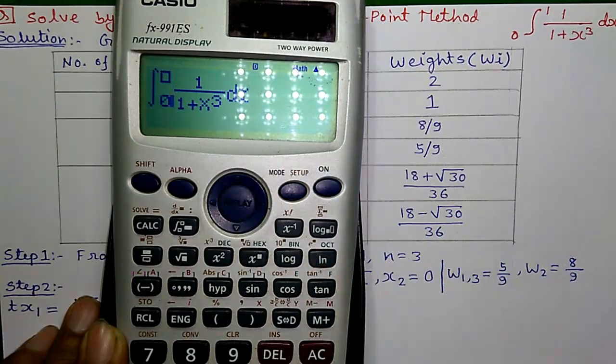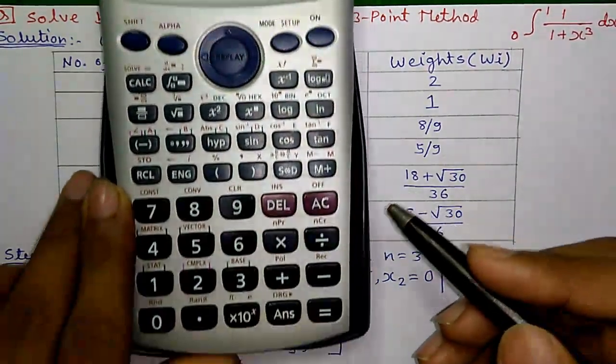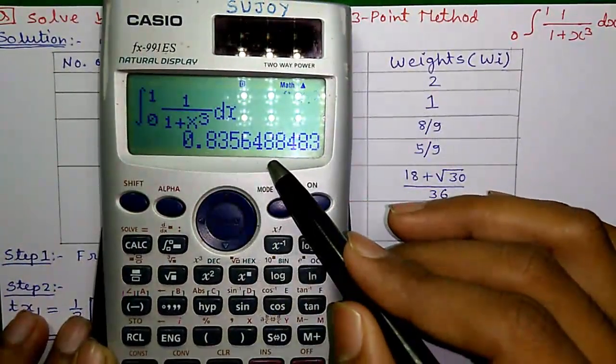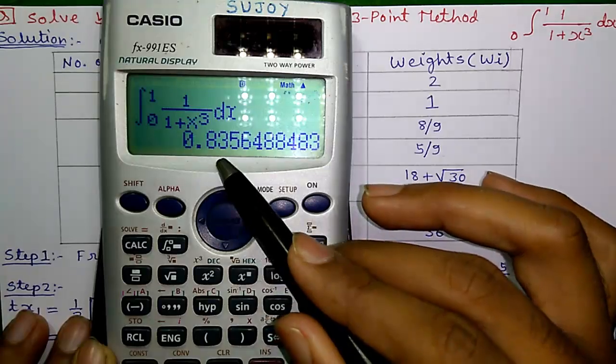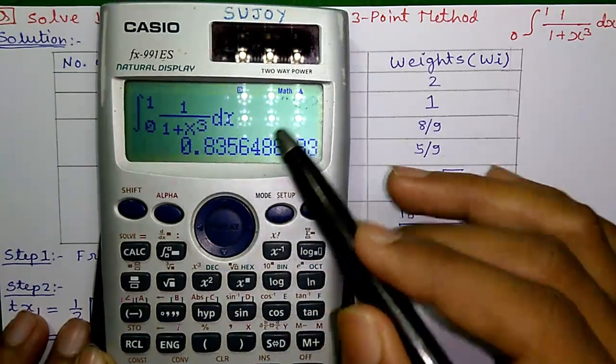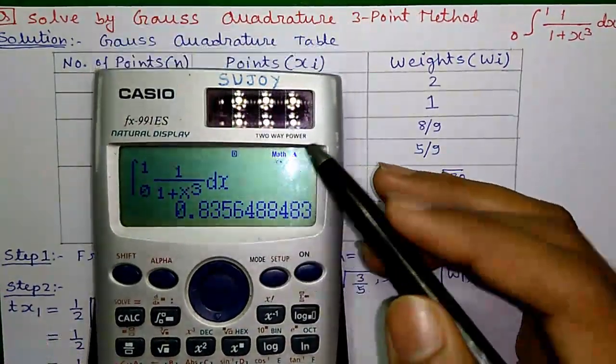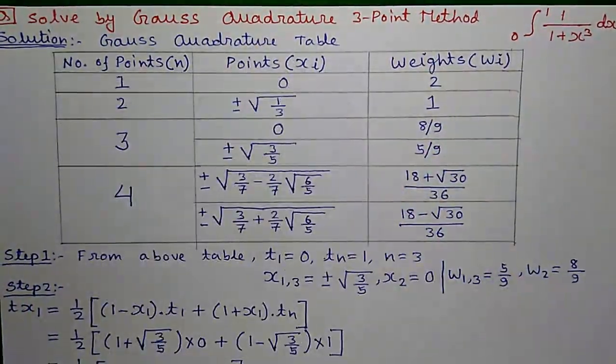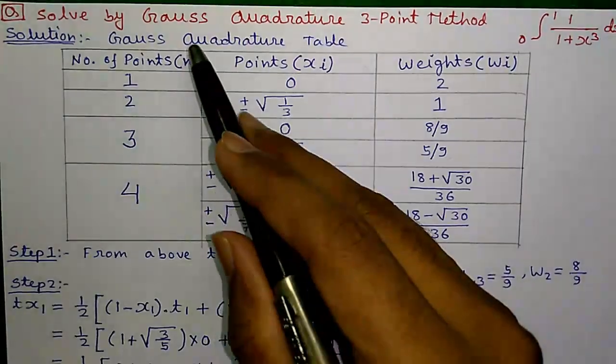Enter the lower limit 0 and upper limit 1 and press the equal to button. So, here is the integration answer 0.8356. Now, I will show you how to get this answer using Gauss Quadrature 3-point method. So, let's proceed to the solution.